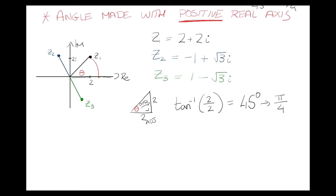Now let's look at a slightly more difficult case — z2, whose angle goes back to here. You have two options: find the small angle in the second quadrant and add it to 90 degrees (pi over 2), or go to 180 degrees (pi) and subtract the small angle. I'll use the first method — find the small red angle and add it to pi over 2.